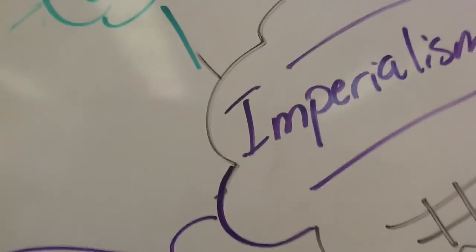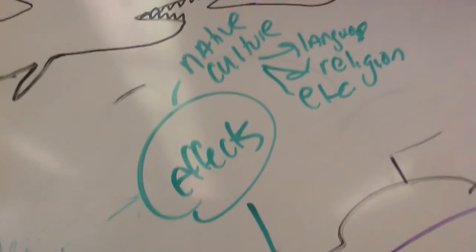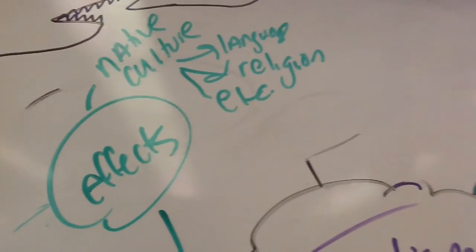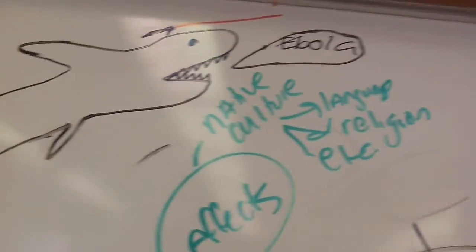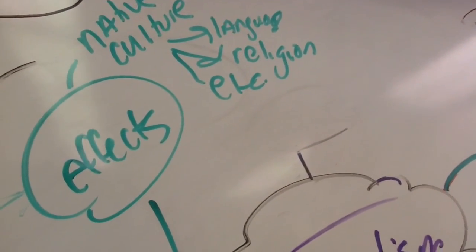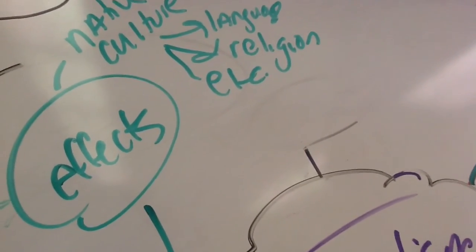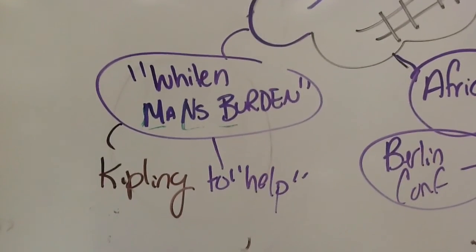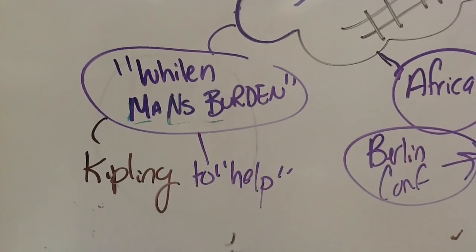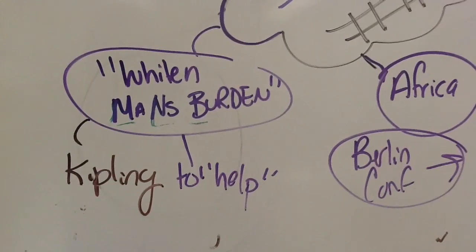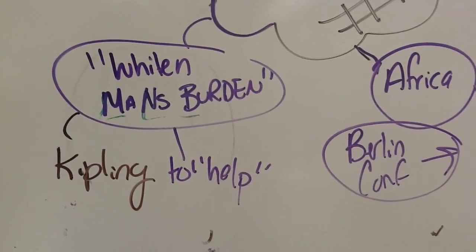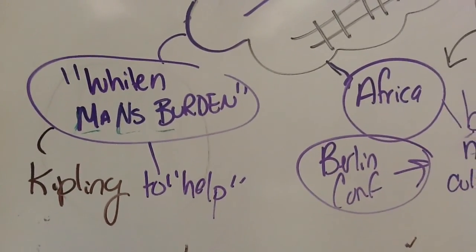Some of the effects of imperialism — there is a whole video and PowerPoint on this — include that native culture was often destroyed. Their language and religion were often replaced with those of the imperial country, along with things like the way they dressed. A key text being studied in class is 'The White Man's Burden' by Rudyard Kipling, which expressed the idea that imperial powers were helping native peoples.